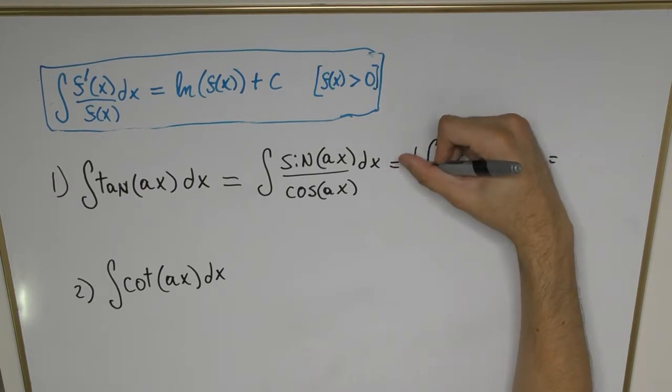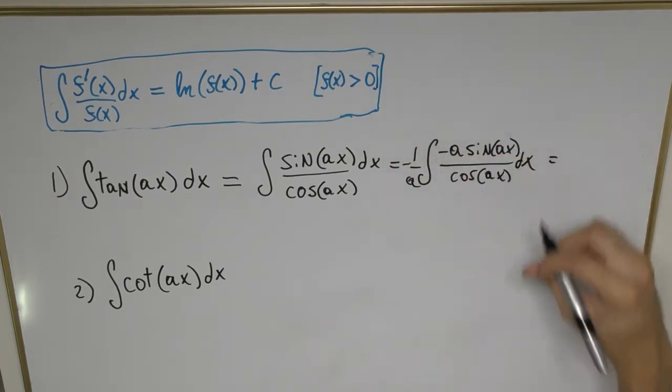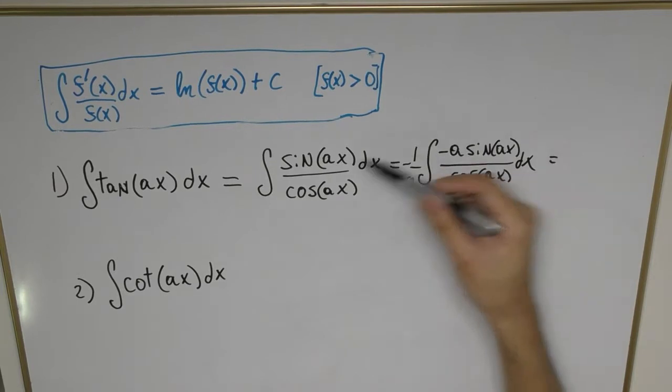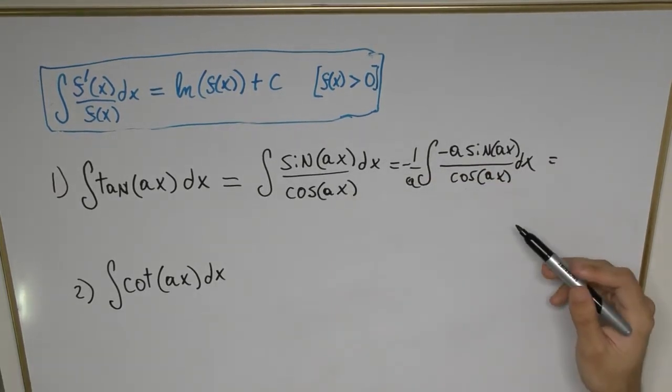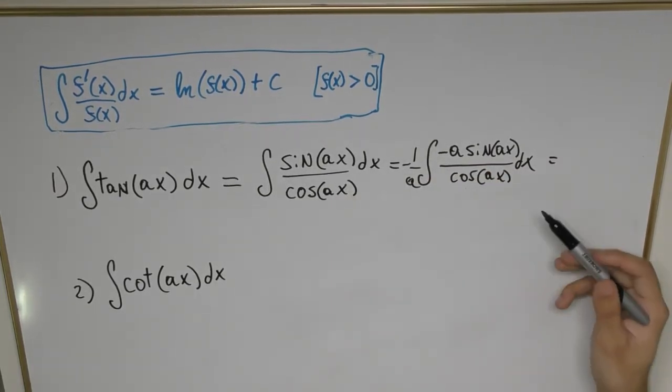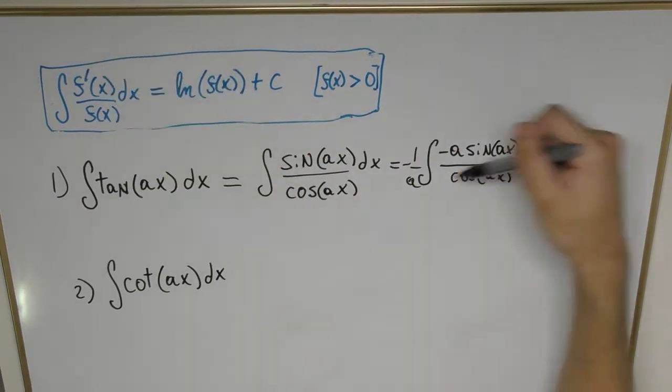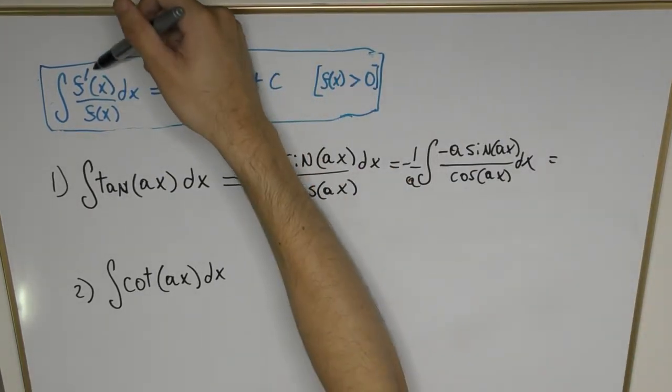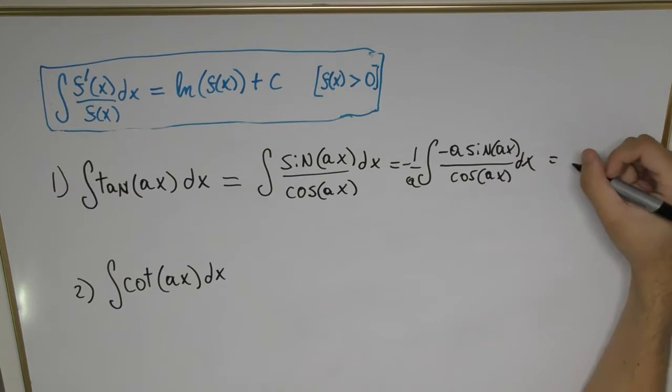Now we apply the formula. This is exactly in the form we want, and that results in minus 1 over a times the natural log of the function